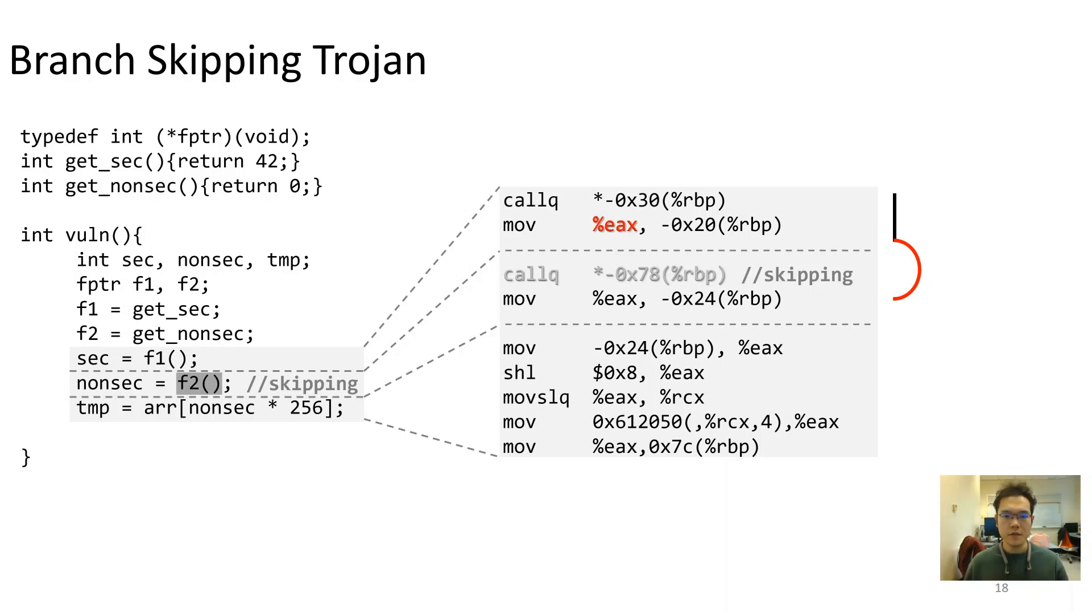At this stage, this register still obtains the secret, as the second function is temporarily skipped. As a result, the secret value will be transmitted through the stack, and further to the gadget that reveals this secret. Please note that this trojan attack works only when skipping happens to the second call, which can be done by locating the function pointer F1 and F2 in different cache lines.